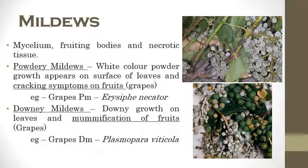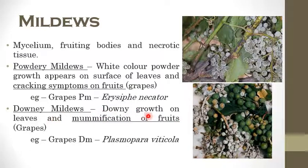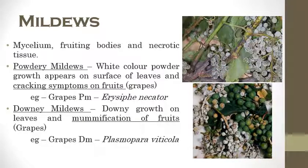The next symptom is grapes downy mildew. The most prominent and diagnostic symptom of downy mildew is mummification of fruits — the fruits are mummified. Grapes downy mildew is caused by Plasmopara viticola. The disease is also the main reason responsible for the development of Bordeaux mixture by Millardet.